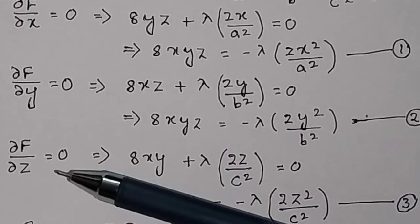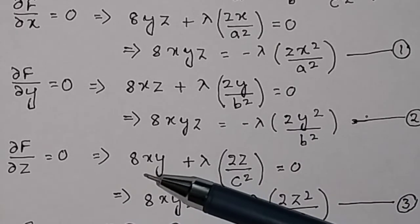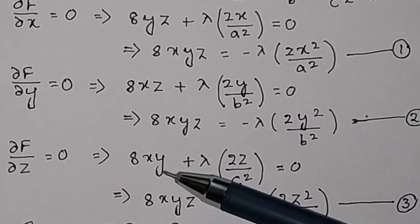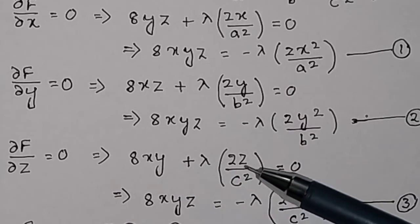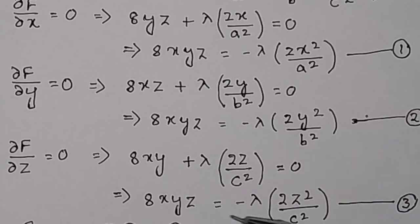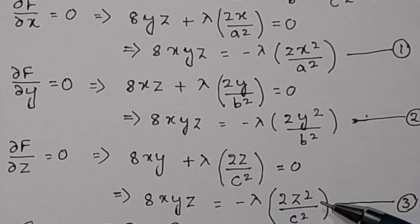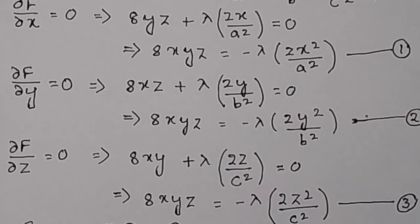Similarly, taking the partial derivative with respect to z gives 8xy + λ(2z/c²) = 0. Multiplying both sides by z gives 8xyz = −λ(2z²/c²). This is equation 3.